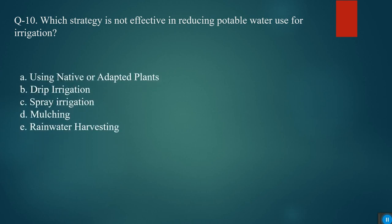Which strategy is not effective in reducing potable water use for irrigation? Using native or other plants, drip irrigation, spray irrigation, mulching, and rainwater harvesting. The answer is spray irrigation. Thank you for your patience hearing.